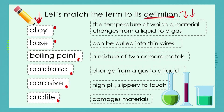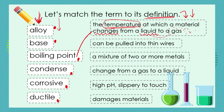Our first definition is the temperature at which a material is going to change from a liquid form into a gas form. What do we call that temperature? If we look down our list of terms we come to boiling point — so the boiling point is the precise temperature at which that particular material changes from liquid into a gas. Our second definition: 'can be pulled into thin wires.' Can you spot a term that describes the property of being able to be pulled into thin wires? That term is ductile.